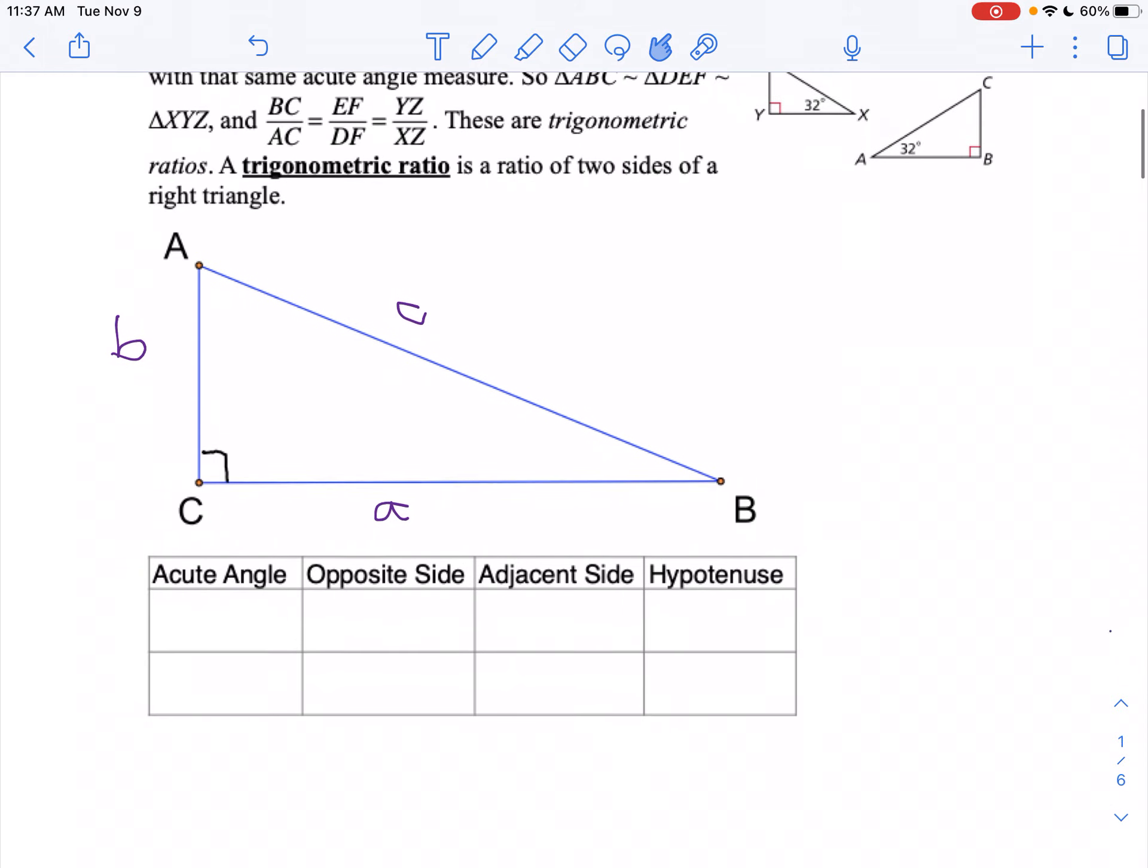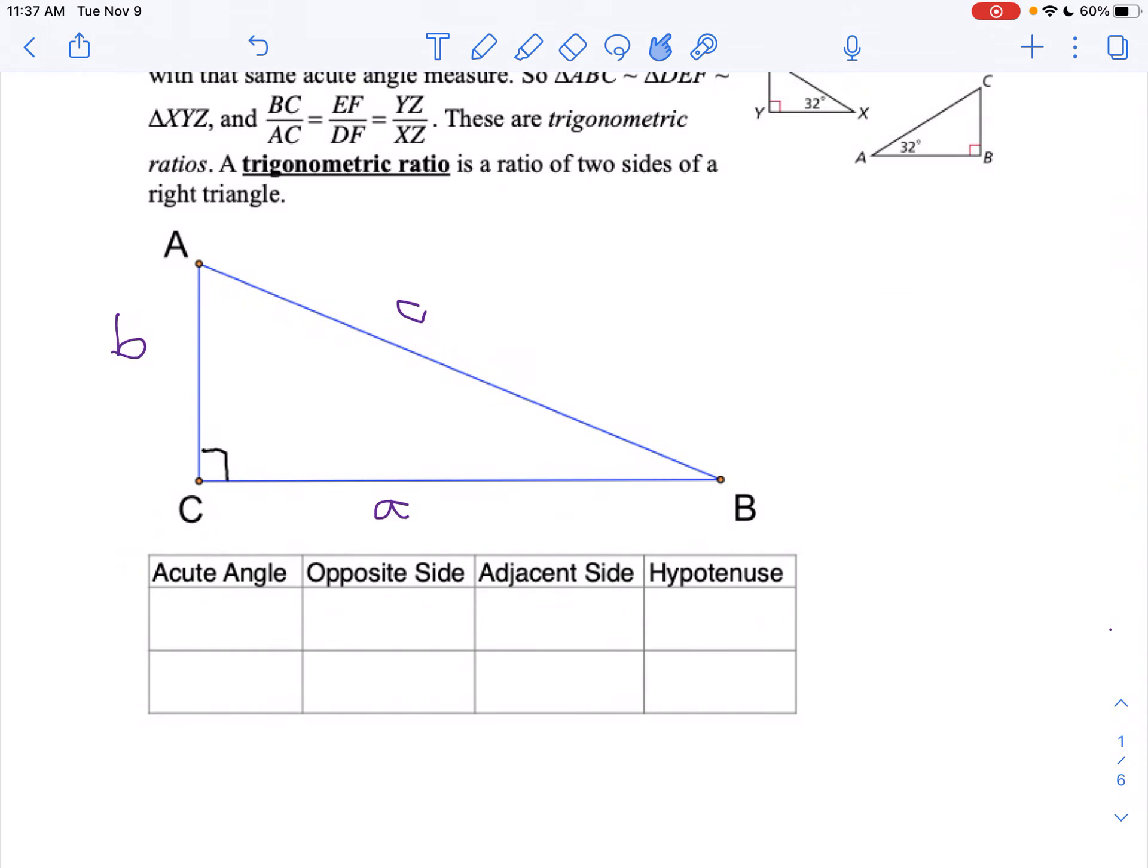When I look at my triangle here, we have to understand I'm going to use some vocabulary words we have to become familiar with. My two acute angles are the ones that aren't right, so angle A and angle B.